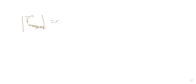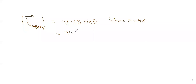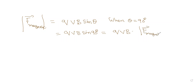The magnitude of the magnetic force is Q V B sine theta. When theta is equal to 90 degrees, it is given by Q V B sine 90. Since sine 90 is one, F magnetic equals Q V B.